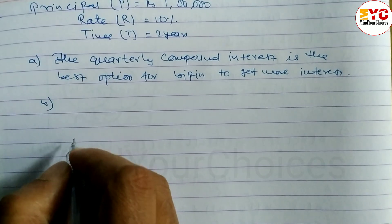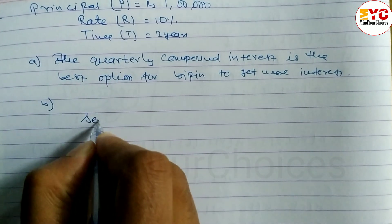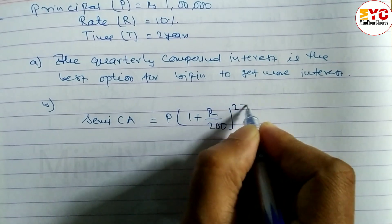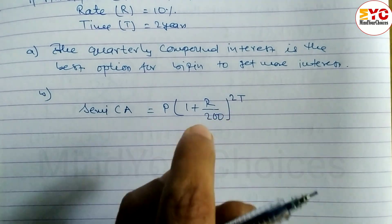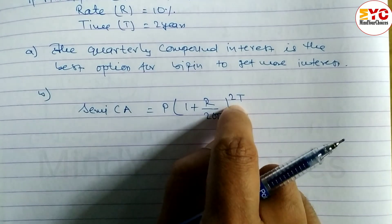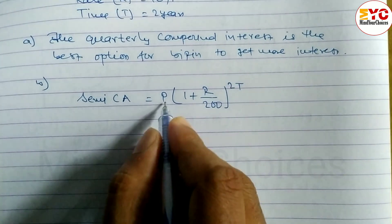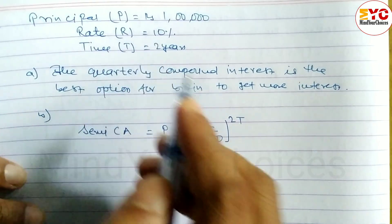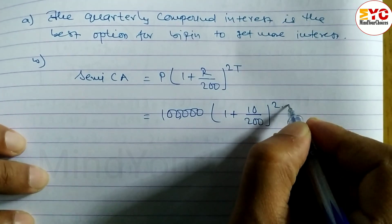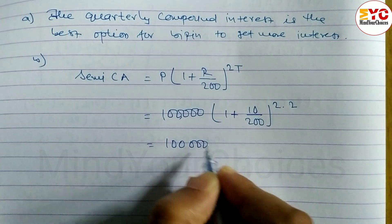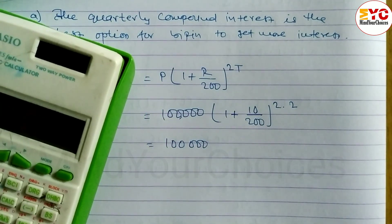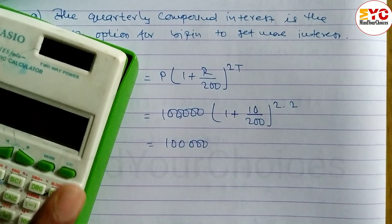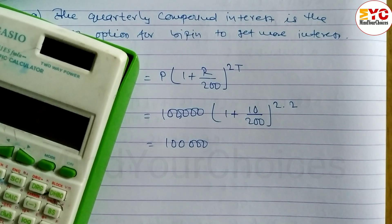Let's find out the compound amount for semi-annual (half-yearly). The formula for semi-annual compound amount is: A = P × (1 + r/200)^(2t). For quarterly it would be divided by 400, and for 4t. Here, P = 1 lakh, r = 10, so we get 1 lakh × (1 + 10/200)^(2×2).